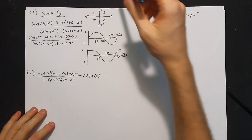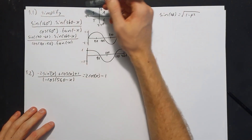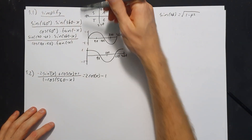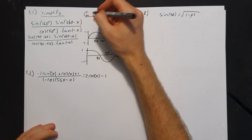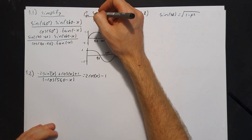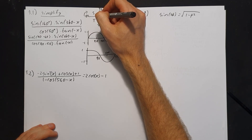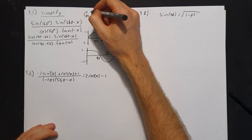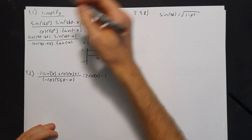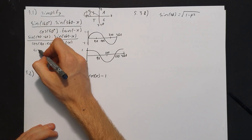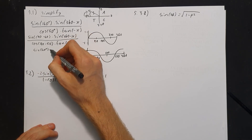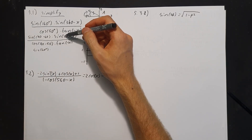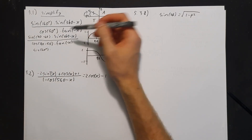Looking at the CAST diagram: sine of (180 minus θ) puts us in the second quadrant, where sine is positive. So sine of (180 minus 40) simply becomes sine of 40 degrees.